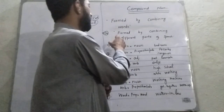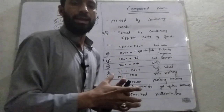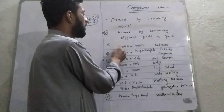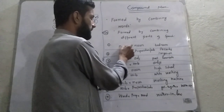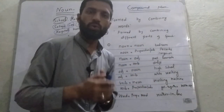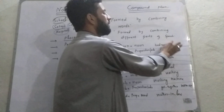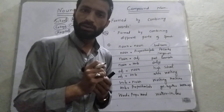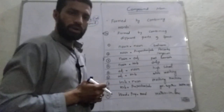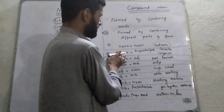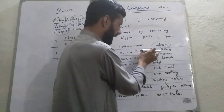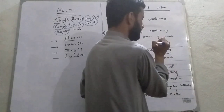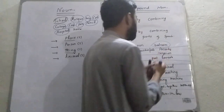I have quoted here nine cases in which we will study how compound nouns are formed. The first case is compound noun formed by the combination of noun plus noun. When two nouns are combined they form a compound noun, like 'bedroom'. The second case is noun plus preposition or adverb, like 'passerby' or 'hanger-on'.